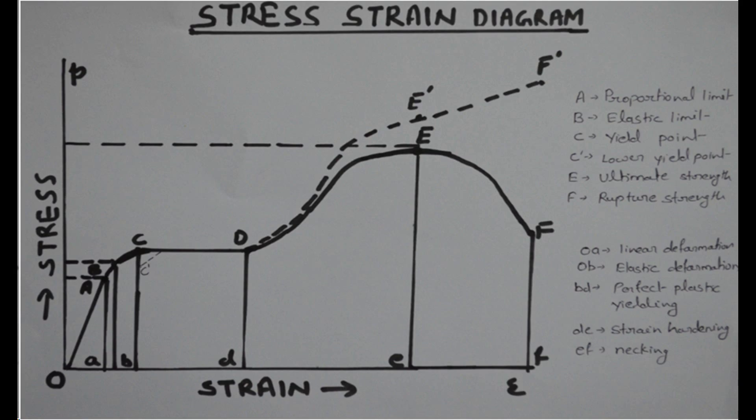The region AB is not linear. So here stress is not proportional to strain and the elongation increases more rapidly. Up to point B the removal of load will result in complete recovery of specimen of its original dimension.